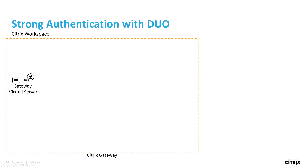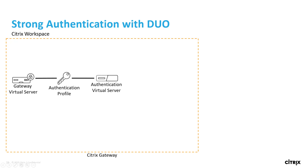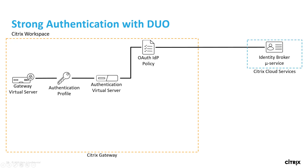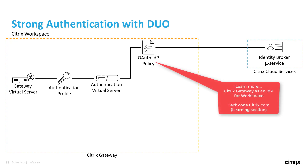From a Citrix gateway configuration perspective, we use an authentication profile to create a link between our gateway virtual server, which is publicly accessible, and our authentication virtual server, which is a local container within gateway. At the highest priority we have an OAuth IDP policy that creates a link between our on-premises gateway and our Citrix cloud services subscription. Setting up gateway as an IDP for workspace using this OAuth IDP policy is a topic covered in another Tech Insight video, which can be found at techzone.citrix.com within the learning section.